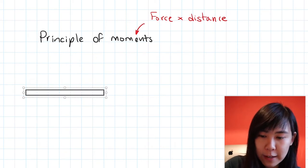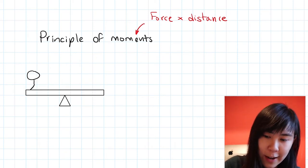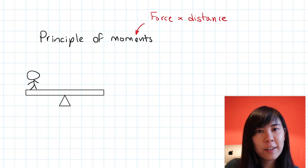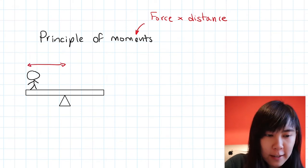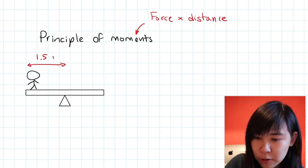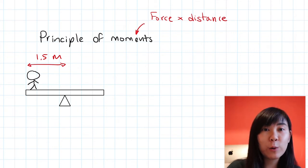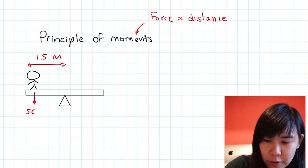Let's look at this example where we have a guy standing on one side of a seesaw. Let's just say he's right at the edge and he is 1.5 meters from the pivot, and we're told that his weight is 500 newtons.